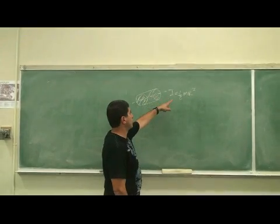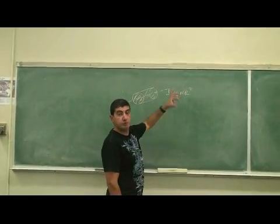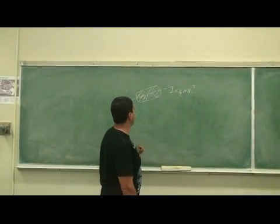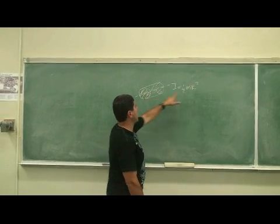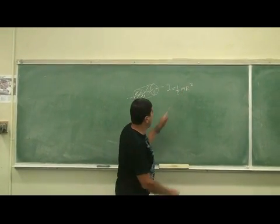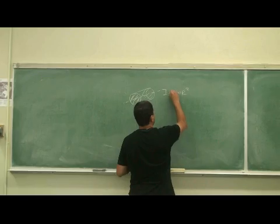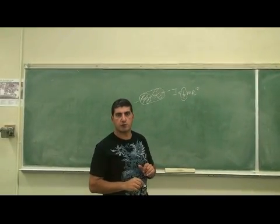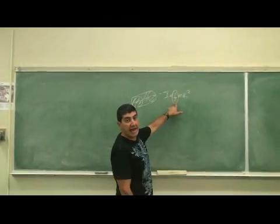So, if the moment of inertia of something is big, it's hard to make it rotate. Moment of inertia of a solid cylinder is half m r squared. What really matters here is the coefficient in front of the m r squared. For a solid cylinder, the coefficient is half.